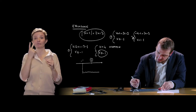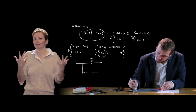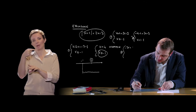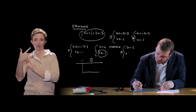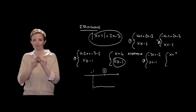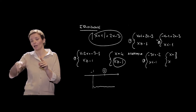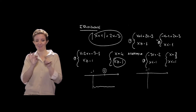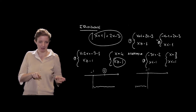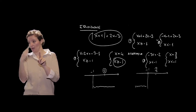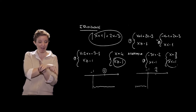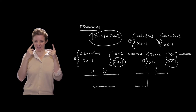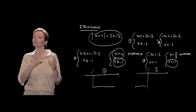Now the second system: -3x = -3 + 1 = -2, so x = 2/3, combined with the condition x < -1. On the number line, 2/3 lies to the right of -1, so it does not fall within the domain of the second system and is therefore not acceptable. The solution set of this equation with modulus contains only the single solution x = 4.